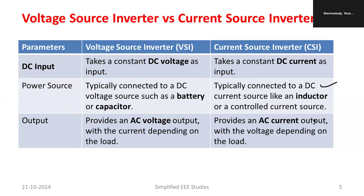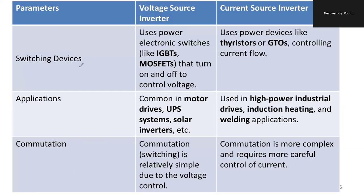Moving on to other parameters for better classification — let us consider the switching devices. In a voltage source inverter, power electronic switches such as insulated gate bipolar junction transistors (IGBTs) and metal oxide semiconductor field effect transistors (MOSFETs) are mainly used to turn on and turn off. Comparing with the current source inverter, the switching devices commonly used are gate turn-off thyristors (GTOs) and the thyristor family.